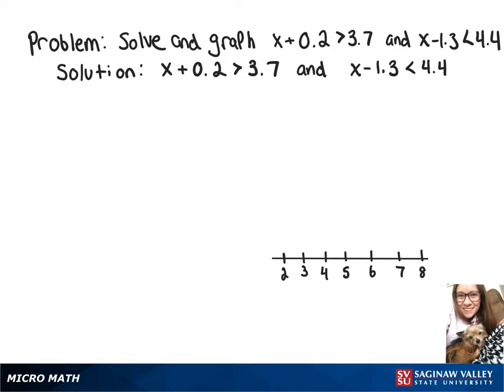In this video, we're going to solve and graph x plus 0.2 is greater than 3.7, and x minus 1.3 is less than 4.4.